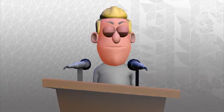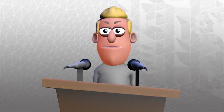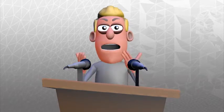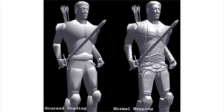This makes the models look much more detailed without the need for very high polygon counts. Here's an example of the effect adding a normal map can have. Both of the models in this image have identical polygon counts but the one on the right has a normal map applied. The pixel shader takes the data provided by the normal map and uses this to adjust the colour of the pixels depending on how they should react to the light that is being applied.